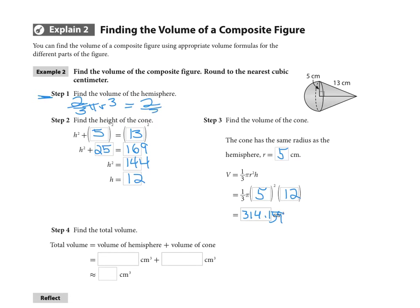again, the radius, which is 5, and then cube it. And that is going to give me approximately 261.799 cubic centimeters.